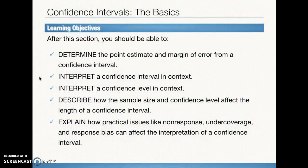The objectives of this section are to determine the point estimate and margin of error from a confidence interval, interpret a confidence interval in context, interpret a confidence level in context, describe how the sample size and confidence level affect the width of a confidence interval, and explain how practical issues like non-response, undercoverage, and response bias can affect the interpretation of a confidence interval.